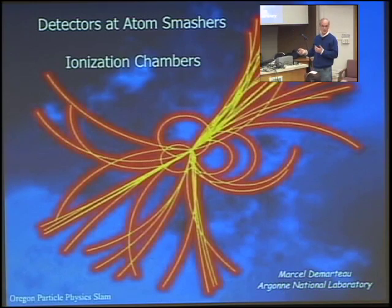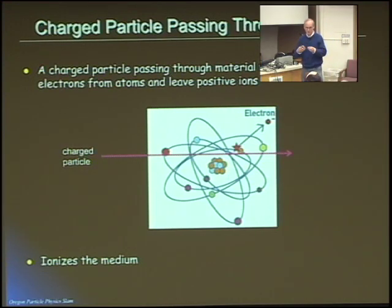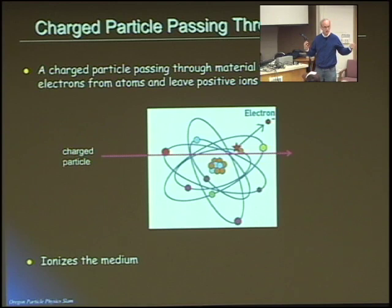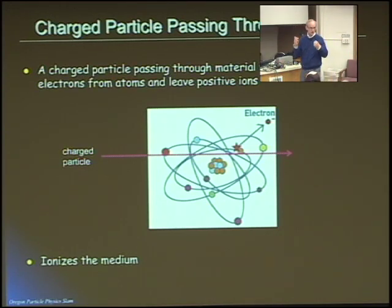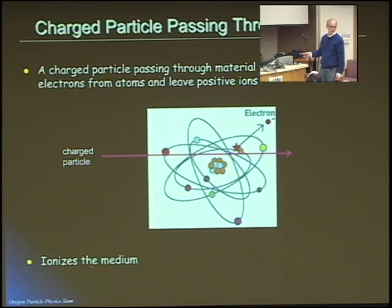The technique that we use is ionization chambers. If you have a charged particle produced at one of these collision points and it goes through matter, that charged particle will knock off electrons from the atoms in the medium it travels through. We call that ionizing the medium.